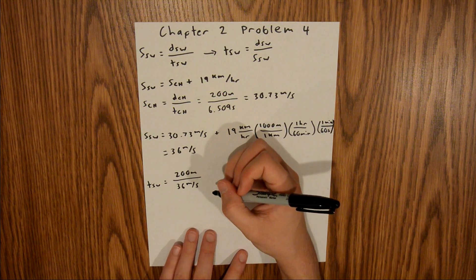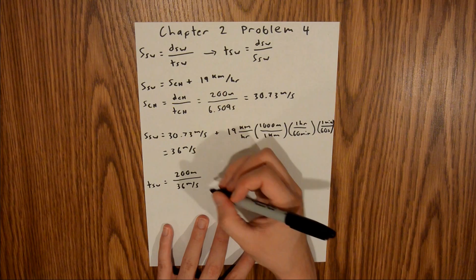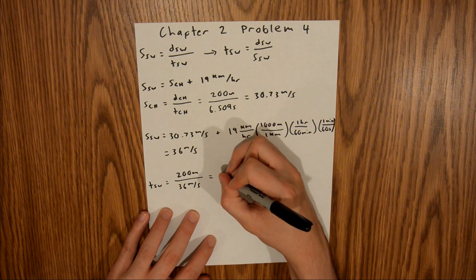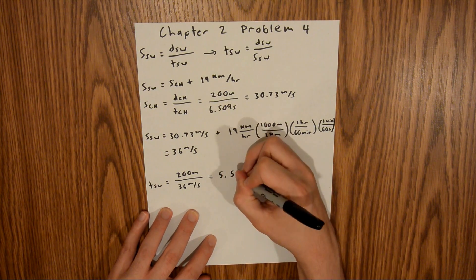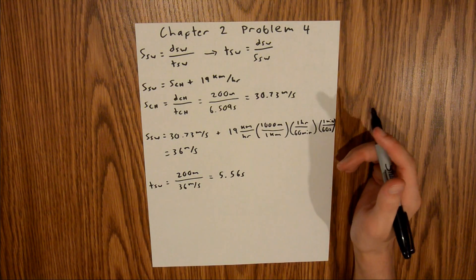you will find that the time it takes for SW to go through 200 meters is equal to 5.56 seconds. And that's your final answer for this problem.